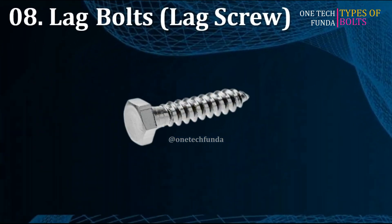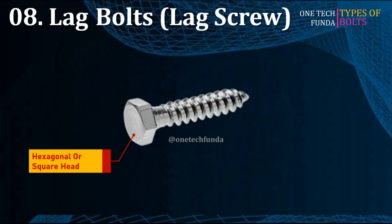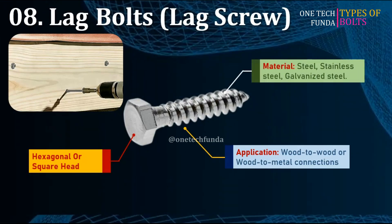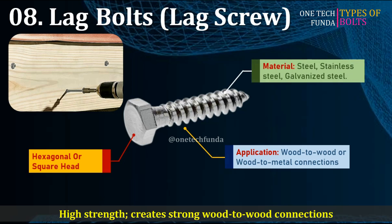Lag bolts, also called lag screws, are large heavy-duty screws with a hexagonal or square head. Commonly used in wood-to-wood or wood-to-metal connections. Materials include steel, stainless steel, and galvanized steel. The main advantage is high strength and creating strong wood-to-wood connections.